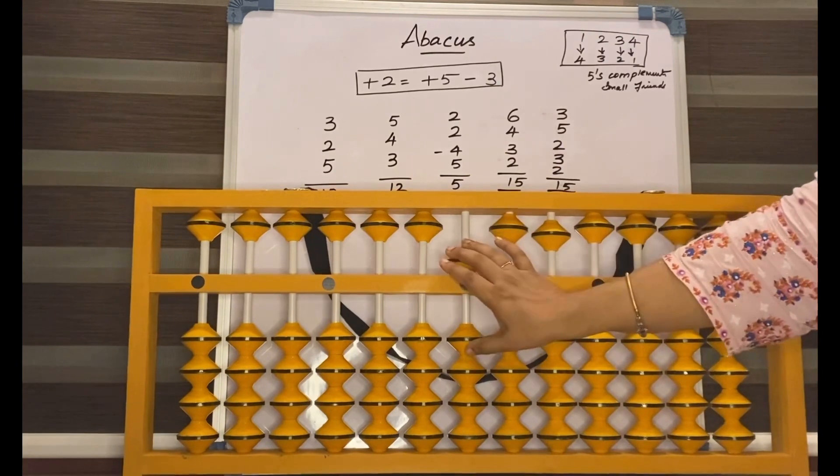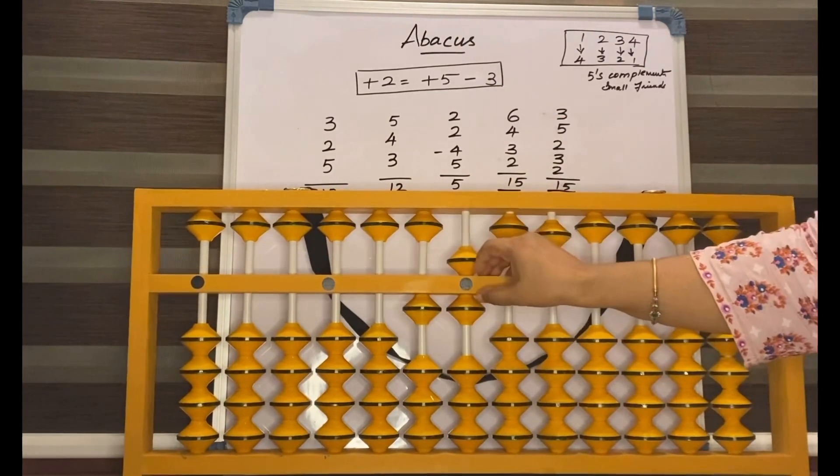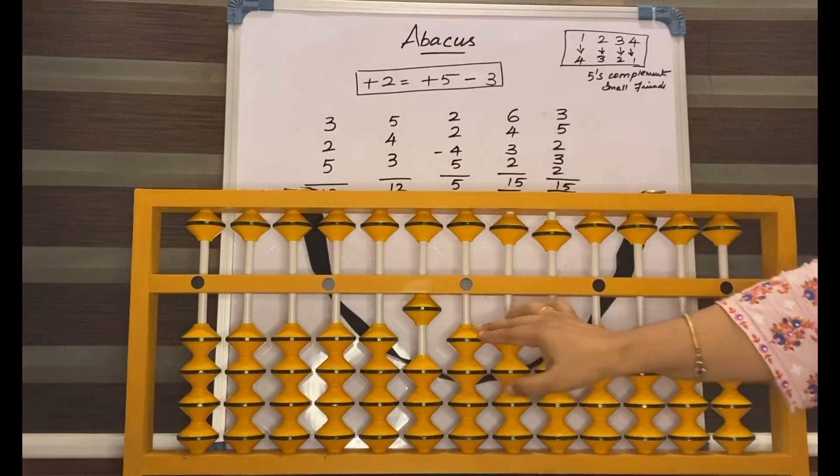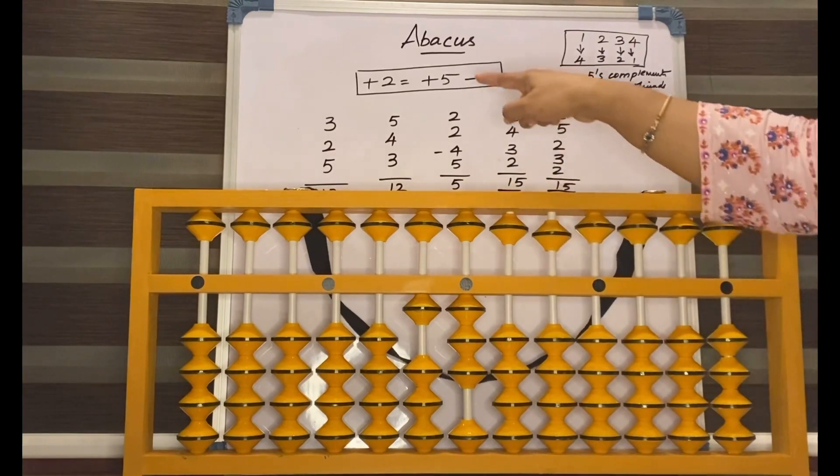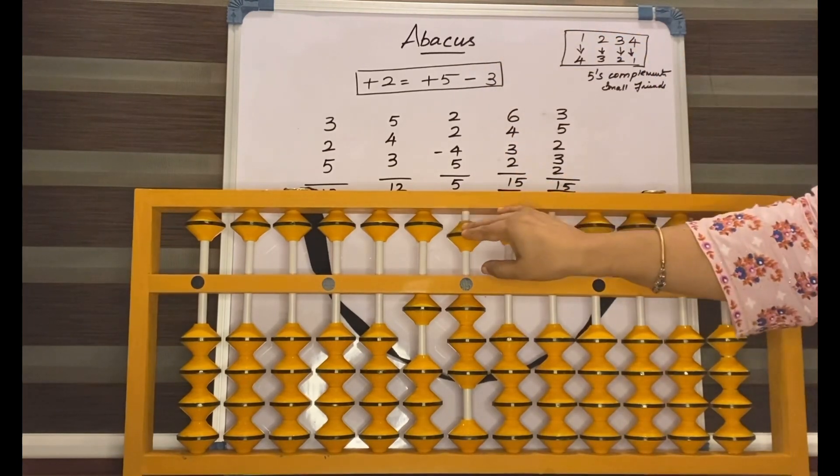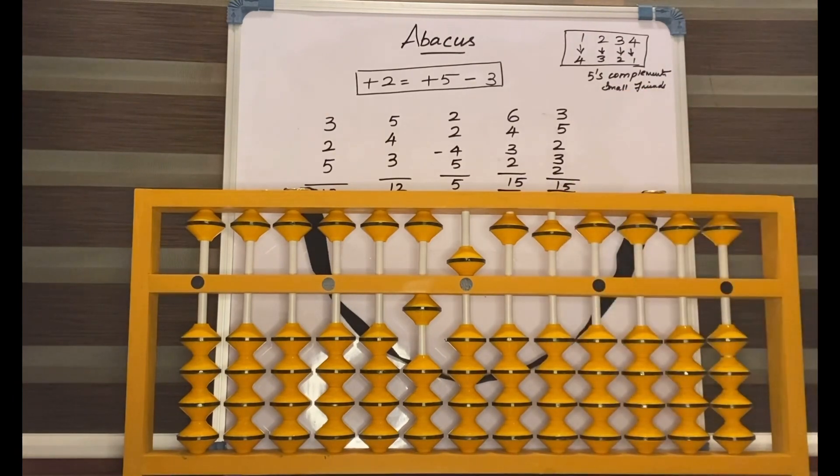5, 6, 4, add 10 less 6, 3, 2. How to add 2? Add 5 less 3, add 5 less 3. Answer is 15.